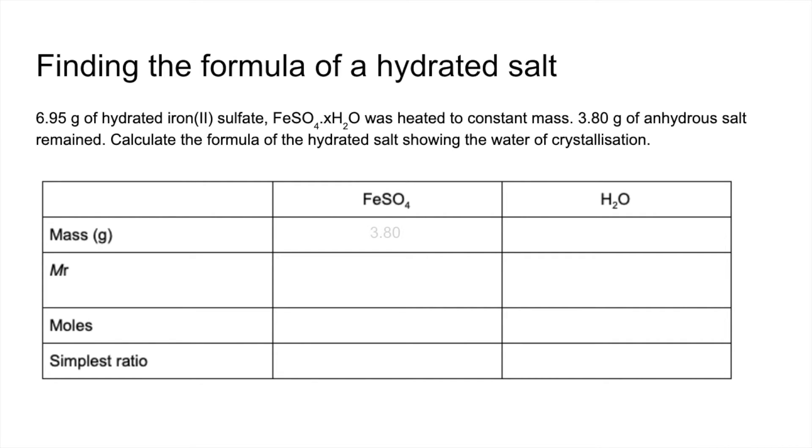Put the masses in first. We know from the information 3.80 grams of anhydrous salt was produced after heating to constant mass. The difference between the starting mass and the 3.80 is how much water has come off, so that came out at 3.15.